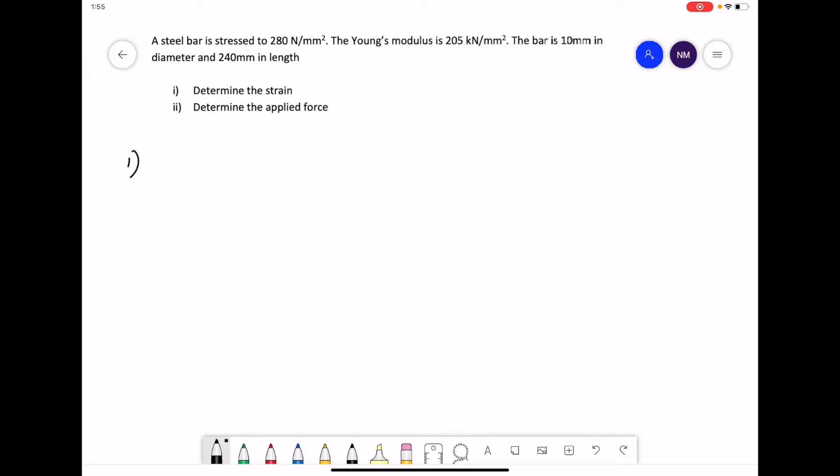To start with, for the strain, the normal equation we use for strain is the change in length divided by the original length. We have the original length but we don't have the change in length so we can't use this equation to work out the strain.